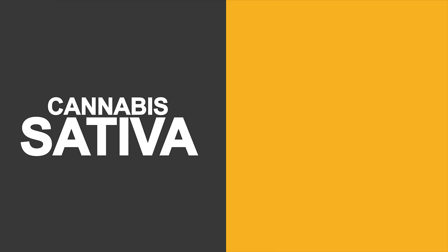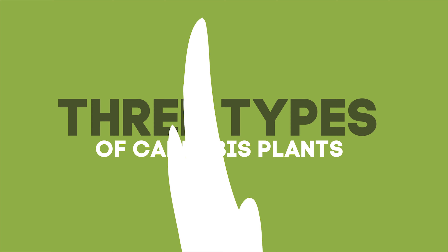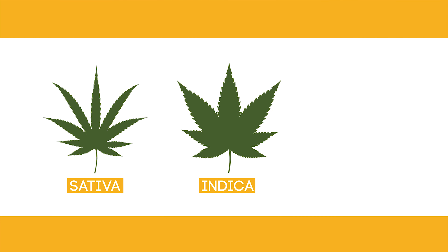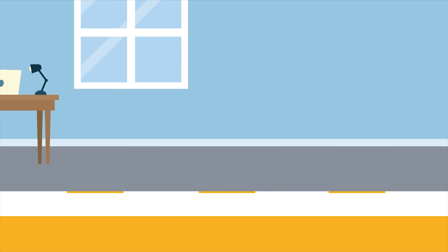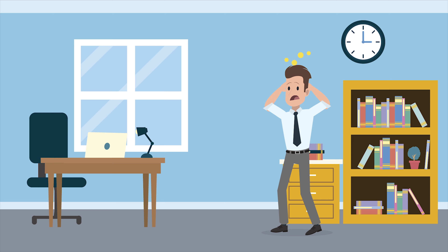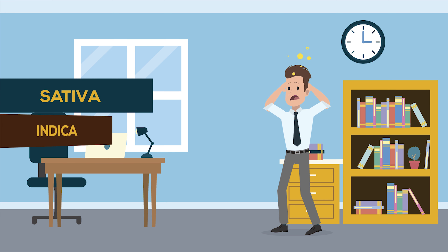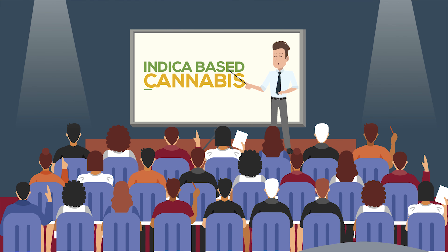The difference between cannabis sativa and cannabis indica. Many of you may be aware that there are three types of cannabis plant: cannabis sativa, cannabis indica, and the hybrid cannabis plant, a cross between the two. Some of you may have also heard that there are psychotropic differences between cannabis from sativa and indica plants.